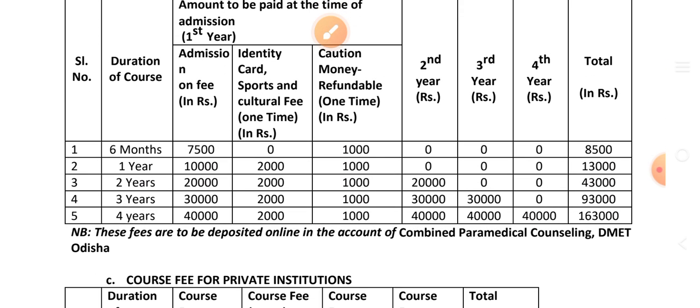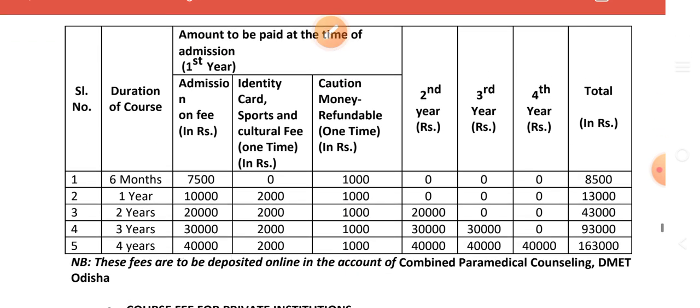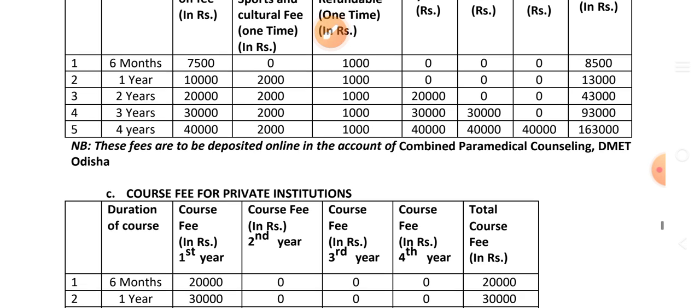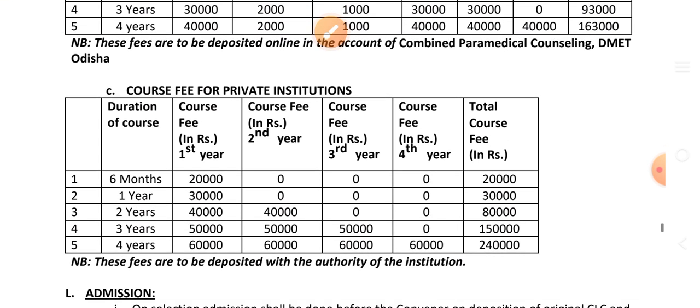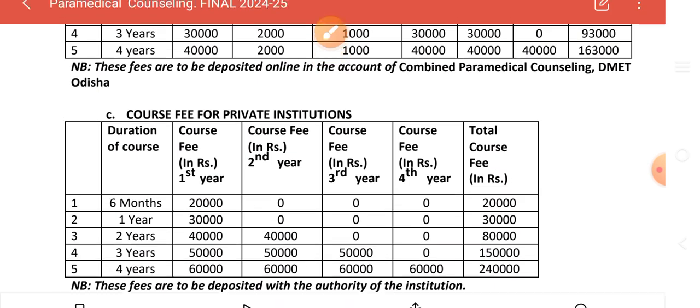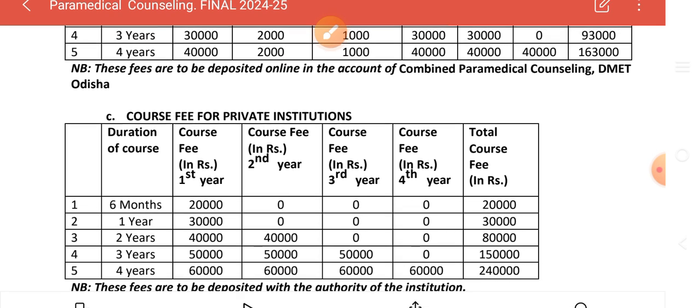For private institutes: 6-month course fee is ₹20,000; 1-year course is ₹30,000; 2-year course is ₹80,000; 3-year course is ₹1,50,000; and 4-year course is ₹2,40,000. This fee structure can be referenced during DMET counseling.